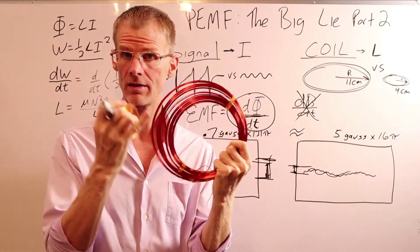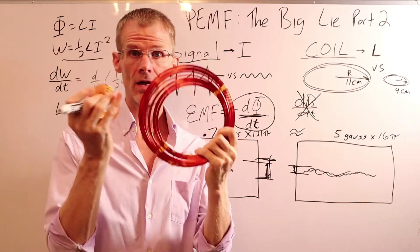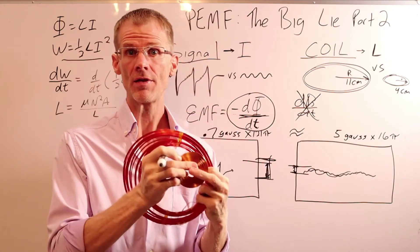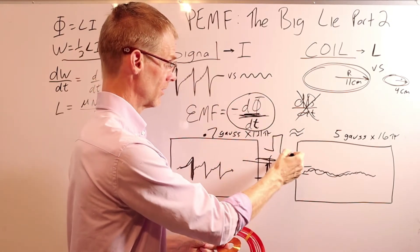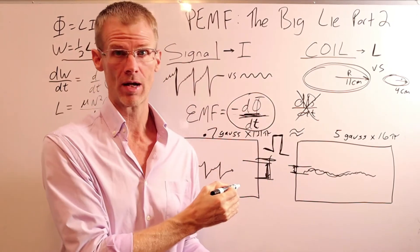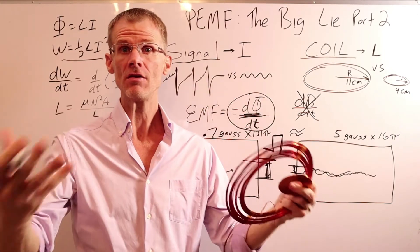So basically, it's the intensity, so again, intensity is part of it, times the area of the coil. And then the third component is the dΦ/dt, how rapidly does it rise and fall? So a square wave is another good example of a rapid rise and fall.